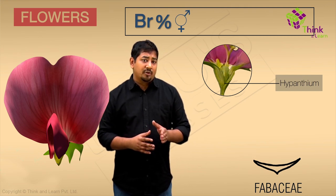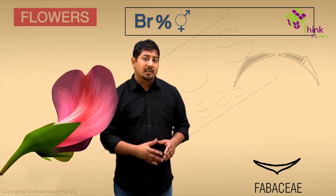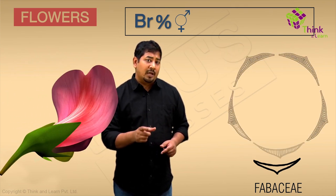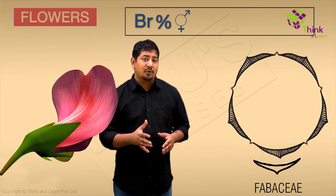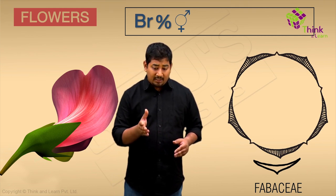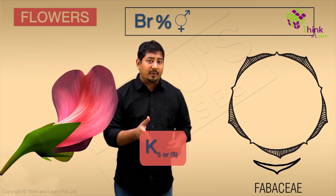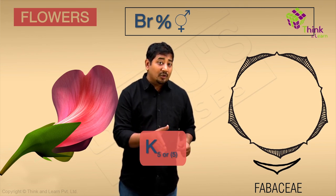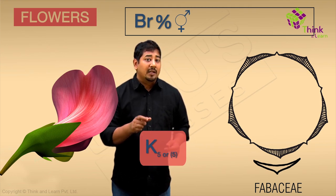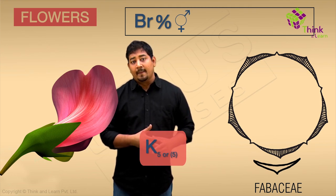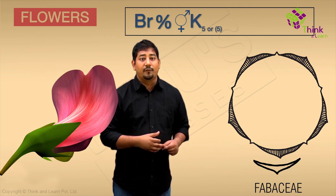Moving on to the individual whorls. The outermost one, that is the sepals or the calyx: the flowers have five sepals that are usually fused together, therefore it is gamosepalous. So you will put the letter K here, and the subscript five within parentheses. But they can also be free and have a valvate or an imbricate aestivation.